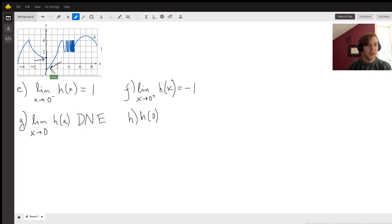So at X equals zero, we can see that this dot over here is filled in, and this dot over here is not filled in. So the dot that's filled in means that that point is actually part of the graph of H(X). And this open circle means that this dot is actually not part of the graph of H(X).